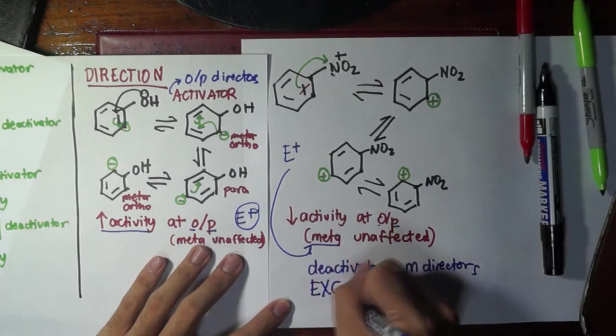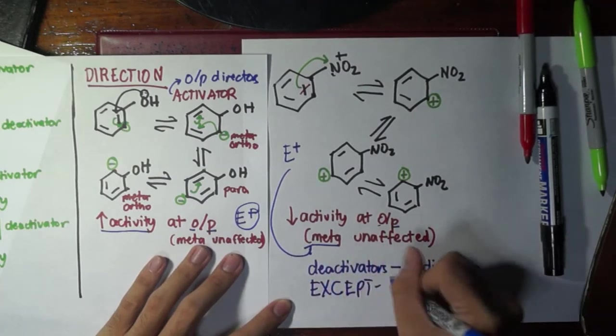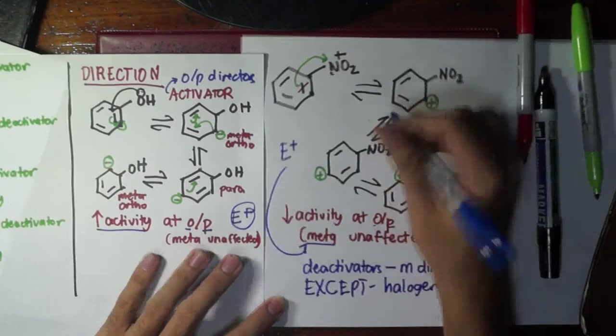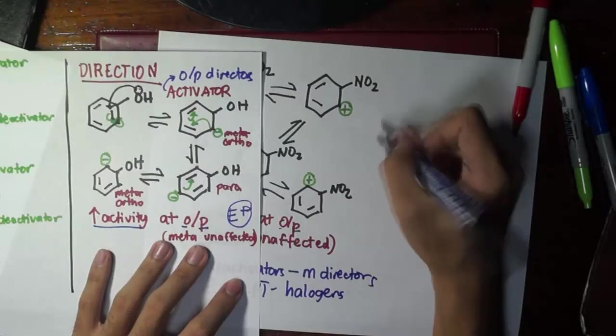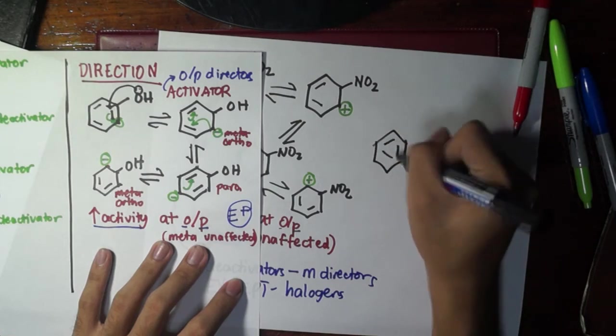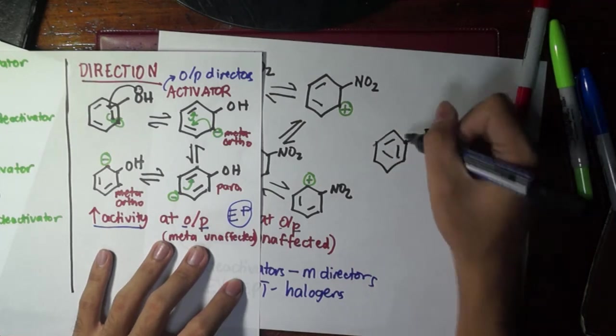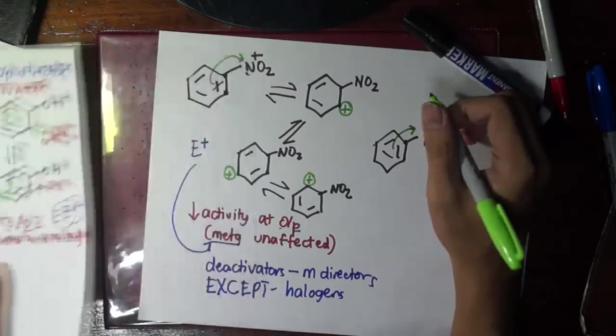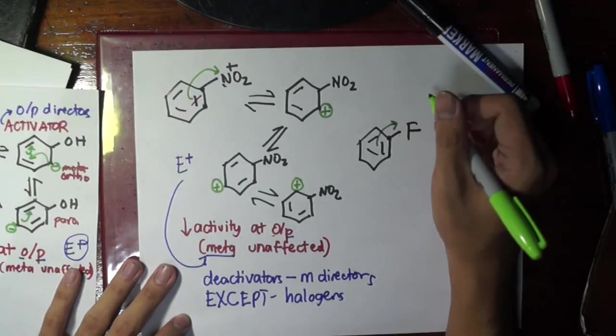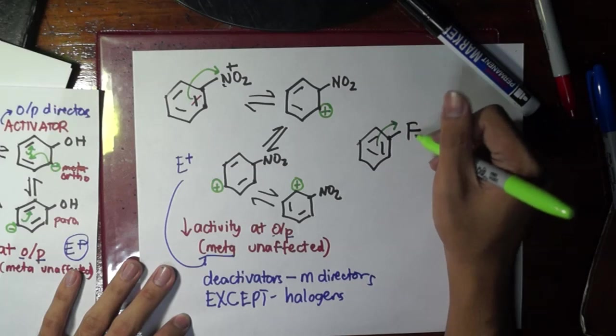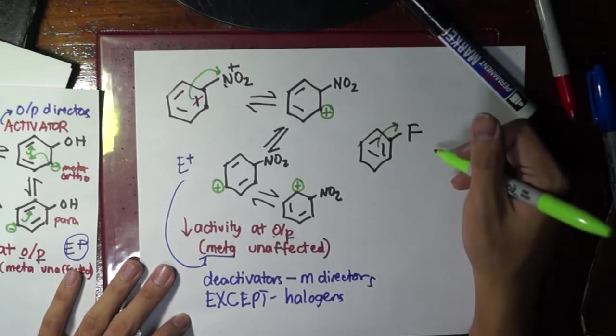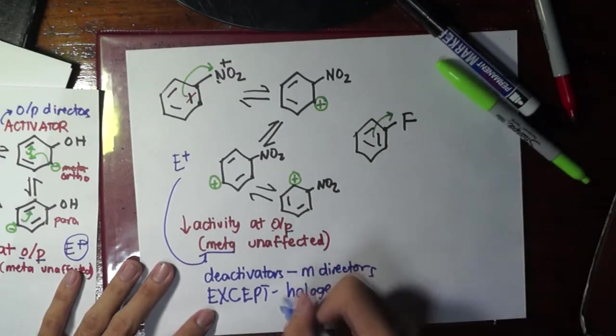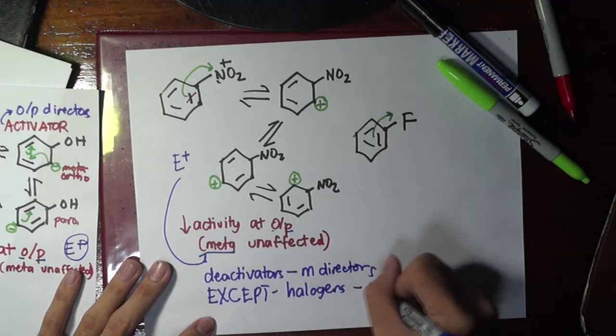Except, take note, except for halogens. Why? Because if you replace this with a halogen, if you have a halogen here, of course it would pull electrons away, it's electronegative, so it would be deactivating. But for a diagram that I won't anymore draw, let's just remember that halogens are actually ortho-para directors.